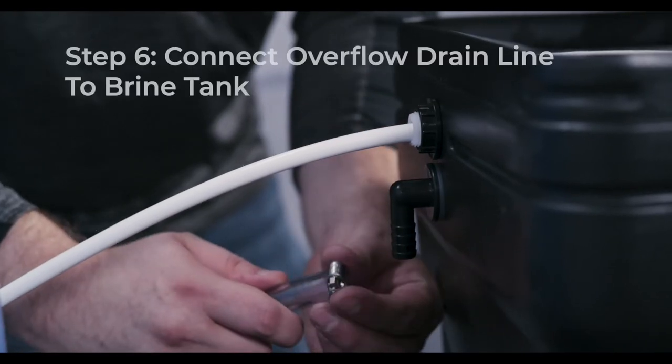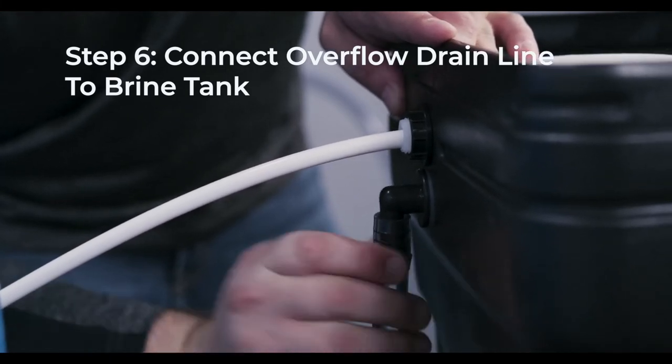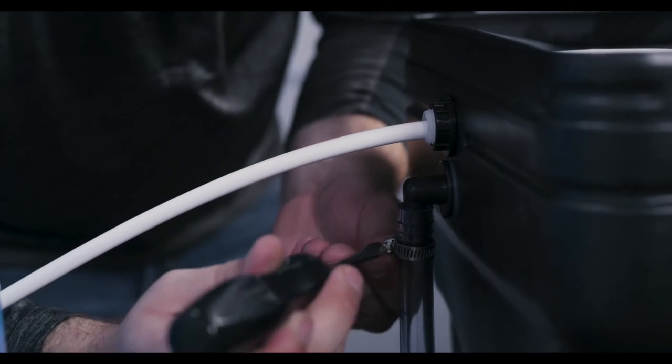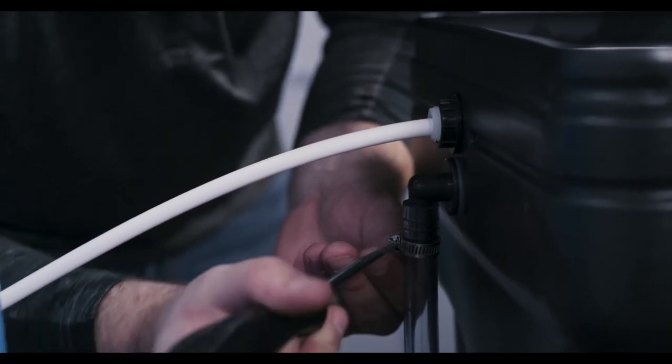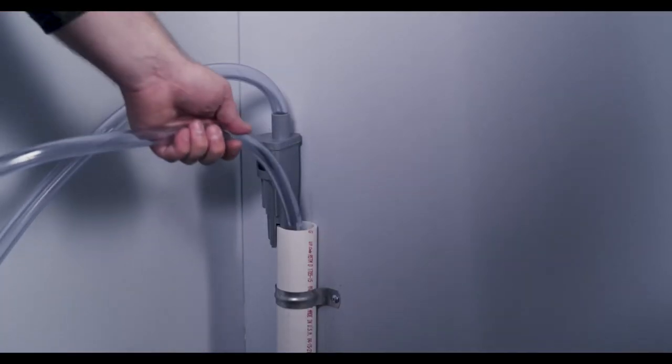Next, connect the brine tank drain line. Slide the second hose clamp over the tubing, then attach the drain tubing to the overflow elbow. Tighten the hose clamp to secure it. Secure the other end of the tubing over a floor drain or other suitable drain.